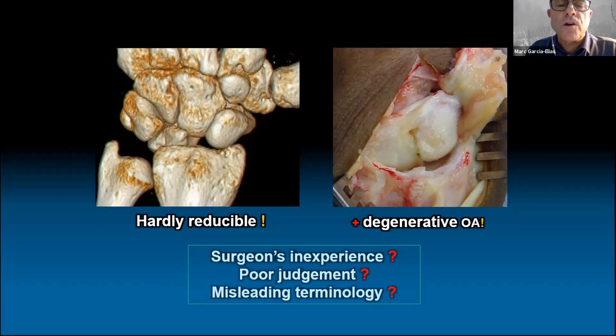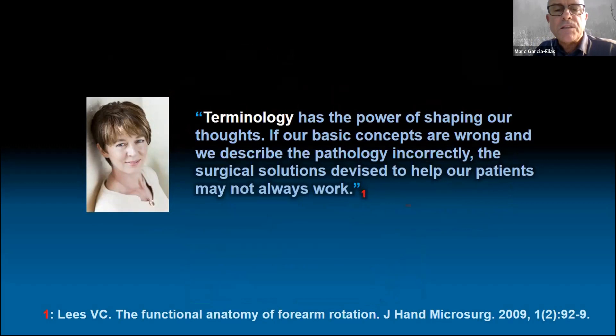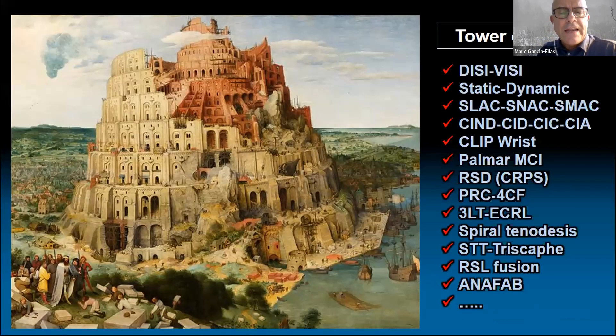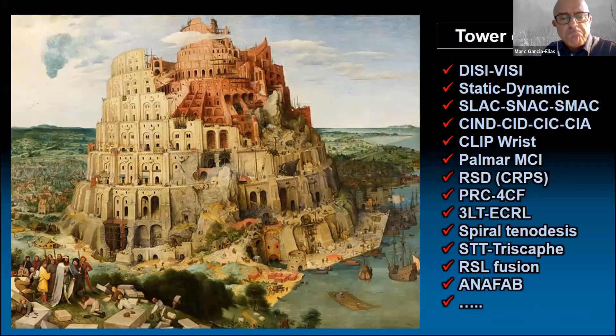Not long ago, Vivian Lees, one of the finest plastic surgeons I know from the UK, warned us about the risks of misleading terminology. Terminology, she said, has the power of shaping our thoughts, and if our basic concepts are wrong, we'll probably describe the pathology incorrectly, and the surgical solutions devised to help our patients may not always work. Misleading terminology is a problem, but so is the accumulation of unnecessary terminology. Don't you feel discouraged every time you look at the tower of Babel of wrist pathology? Were that many neologisms and acronyms really necessary?